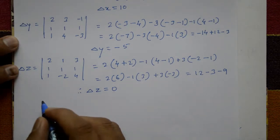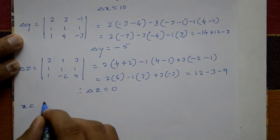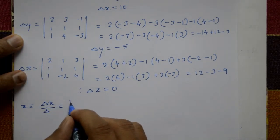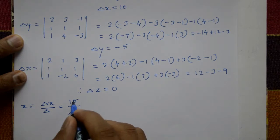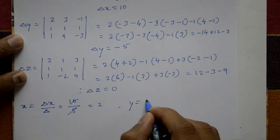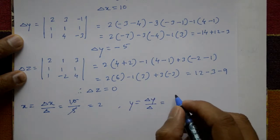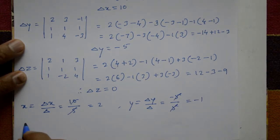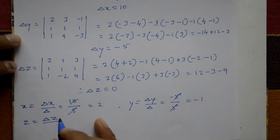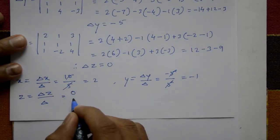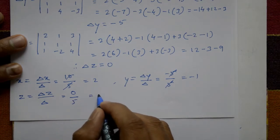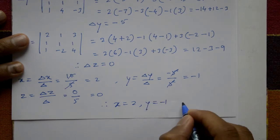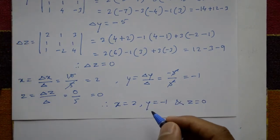Now find x, y, z using Cramer's rule. x = Delta x / Delta = 10 / 5 = 2. y = Delta y / Delta = -5 / 5 = -1. z = Delta z / Delta = 0 / 5 = 0. Therefore, the required values are x = 2, y = -1, and z = 0.